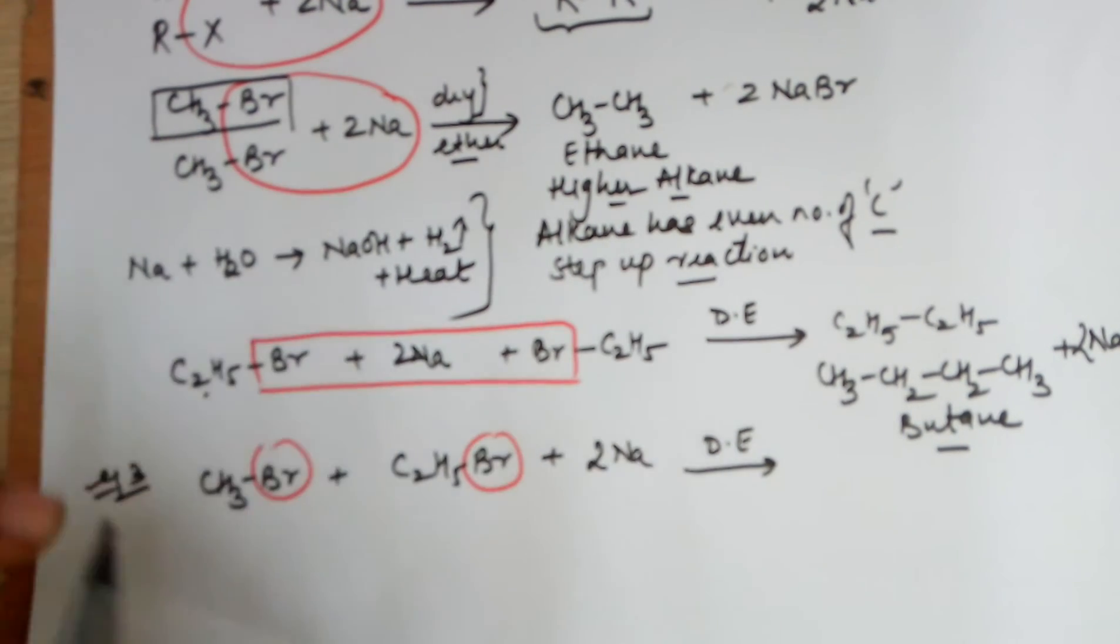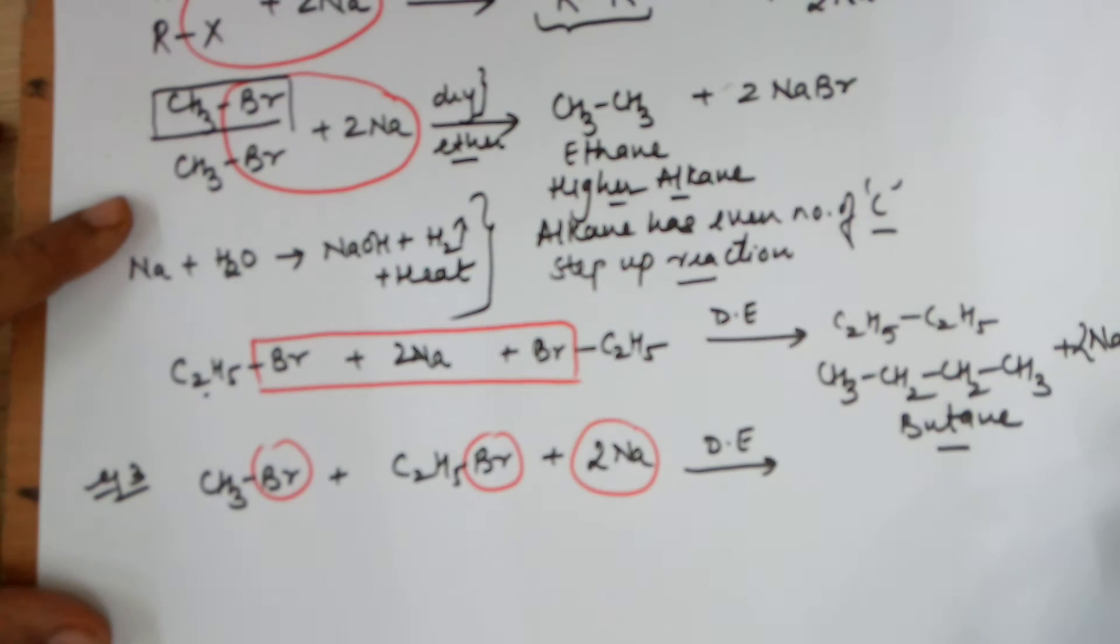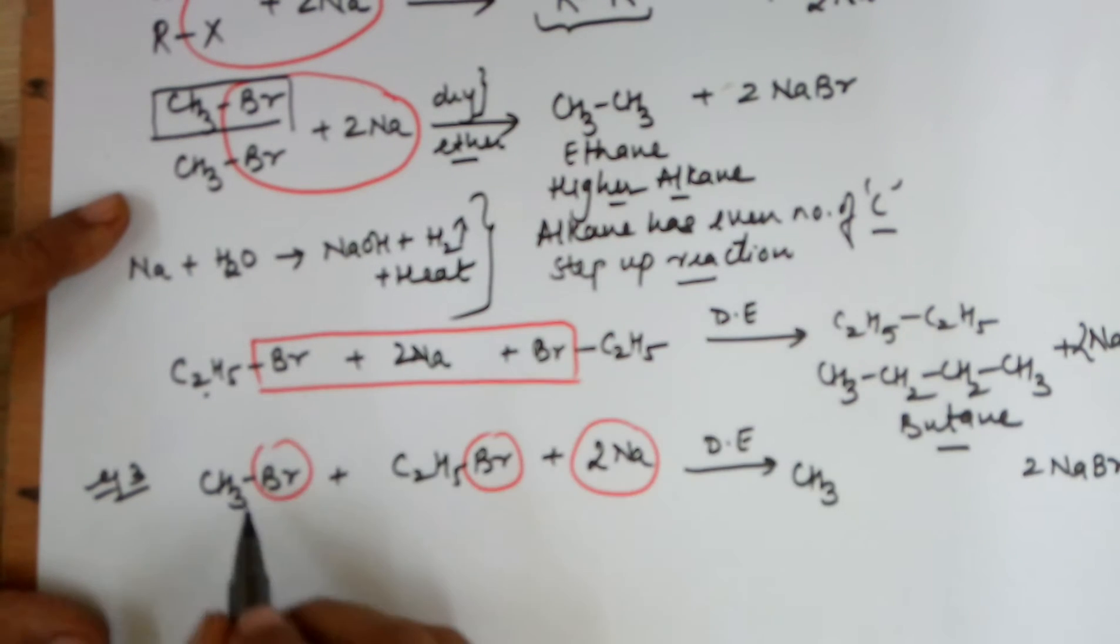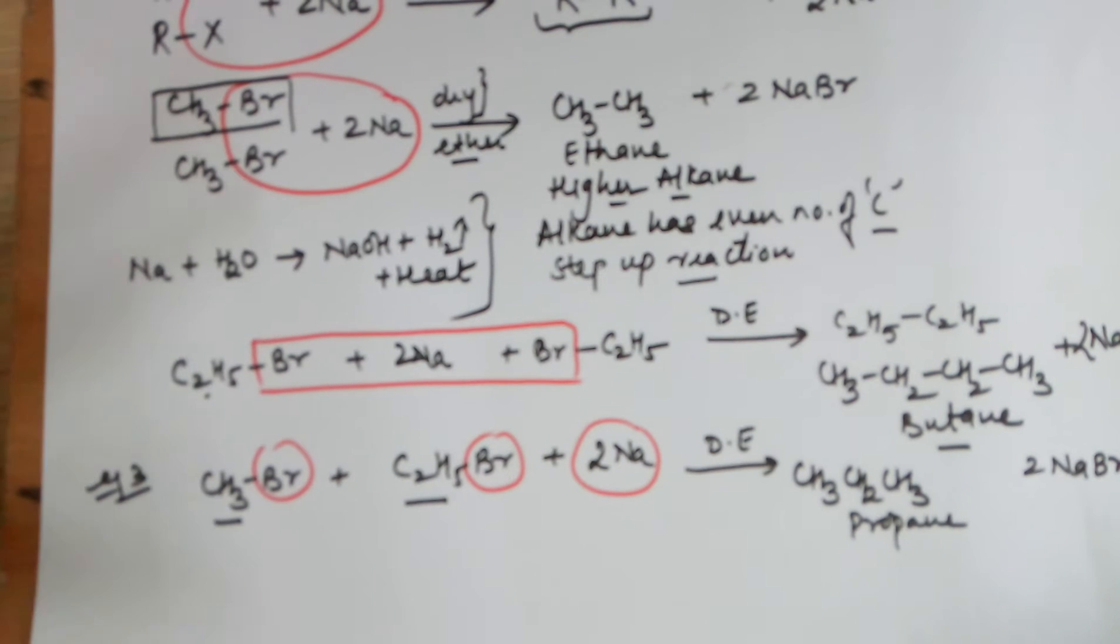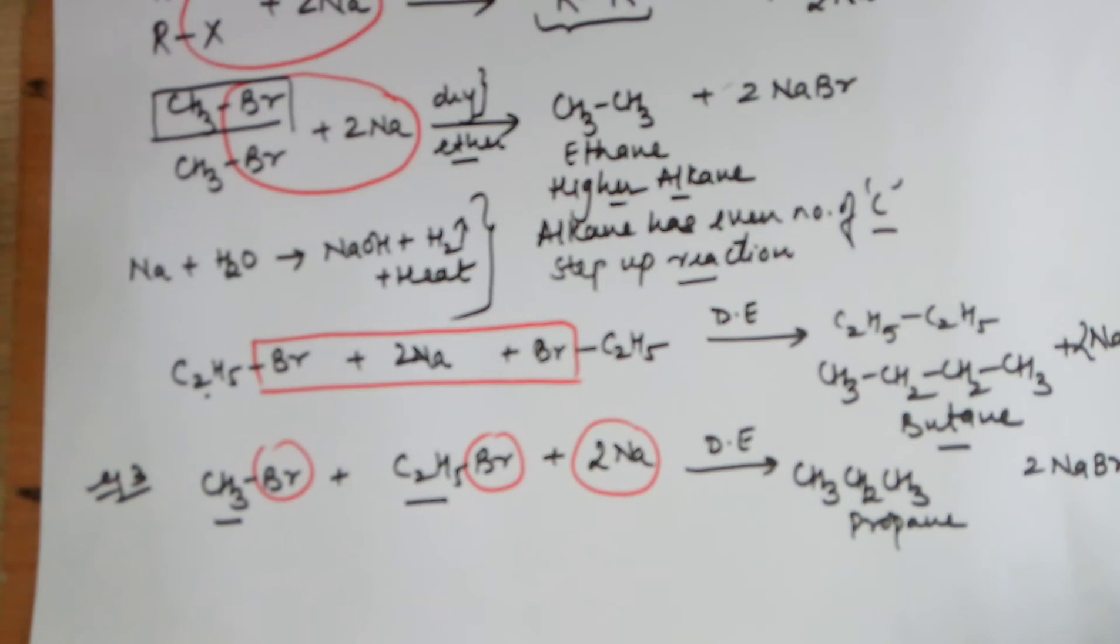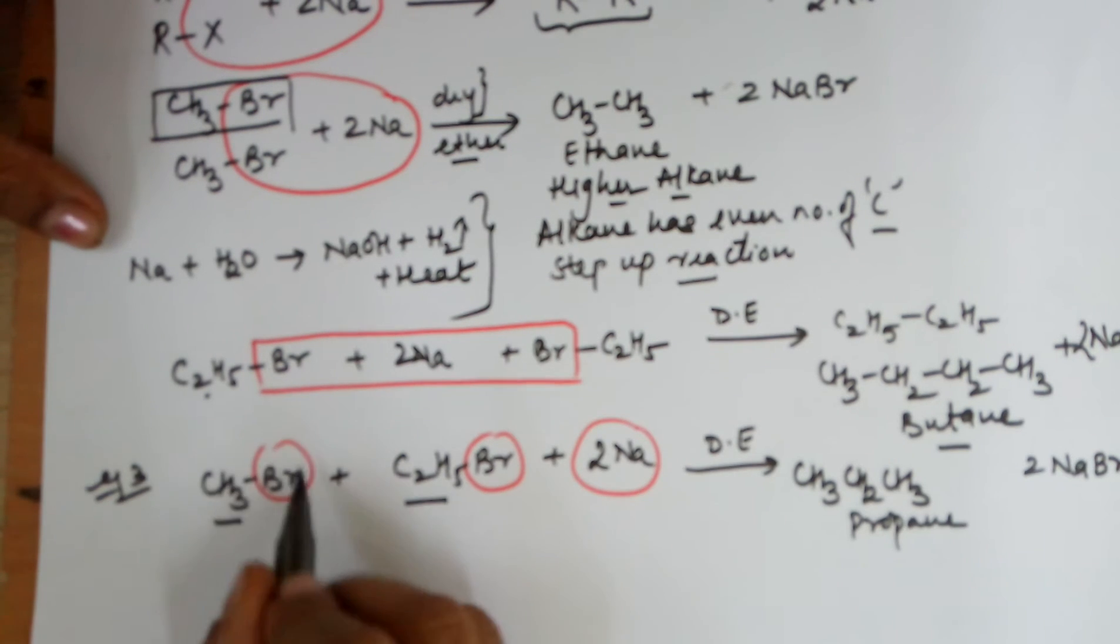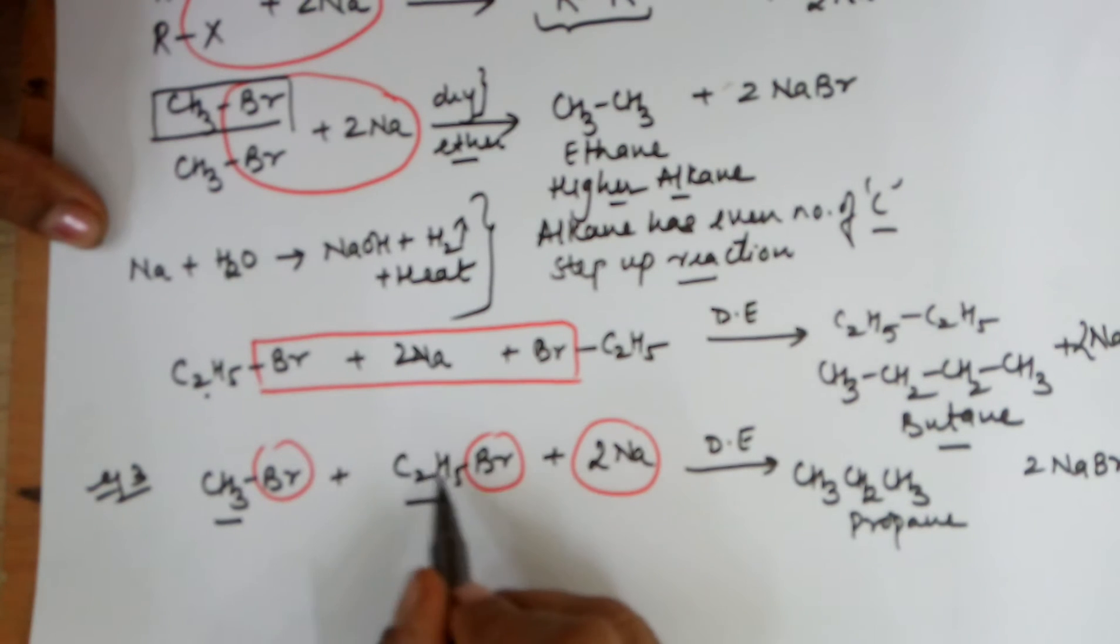two molecules of sodium would take away the two bromines leading to a byproduct of two sodium bromides, and the expected product according to you would be CH3 from the first, CH2 and CH3 from the second. Hence you are expecting a propane, which is quite understandable but which is not the correct answer. The reason being, you are in no capacity to hold on or get one molecule of methyl bromide and one molecule of ethyl bromide and make them react.